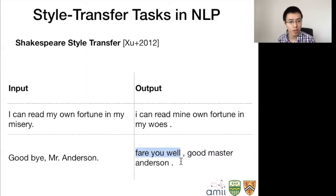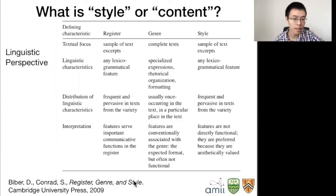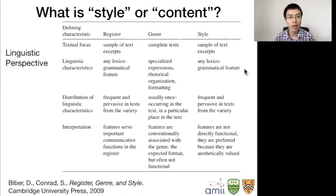Now comes the question — what is style and what is content? There have been many linguistic definitions. Based on the book 'Registers, Genre and Style,' style is defined as features that are not directionally functional but are preferred because of their aesthetic values. Based on this definition, it's almost the same as artistic style of paintings. However, following the strict linguistic definition is very restrictive and limits the applications of style transfer.